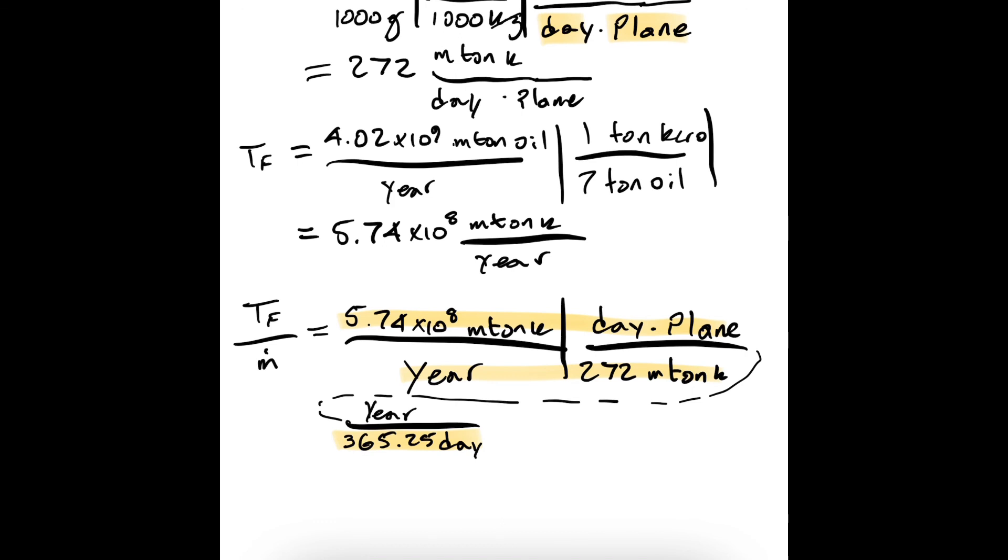Okay, so now we multiply the numerators, divide by the denominators, and that gives us 5.78 times 10 to the 3 planes.